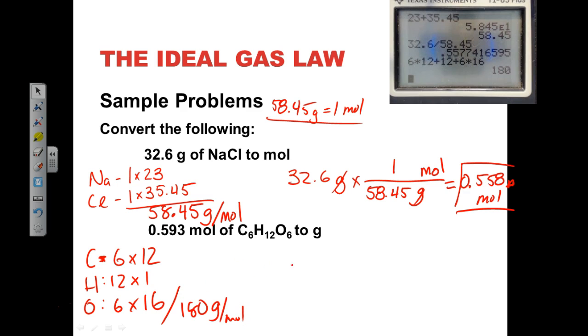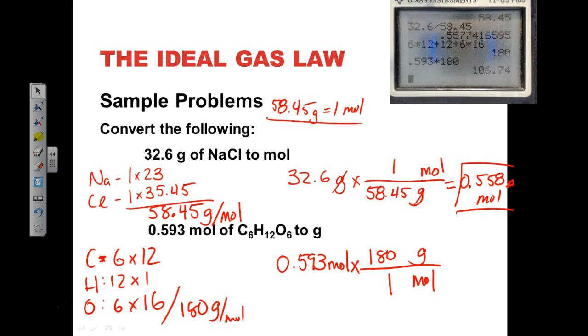Now we can take this, and we can go 0.593 moles, and we can x-line, and we want moles on the bottom, grams on the top. We want to say for every one mole, this weighs 180 grams. And now we can do the math, 0.593 times 180, and we do that, and we get 107 grams of C6H12O6. And so that's our answer.